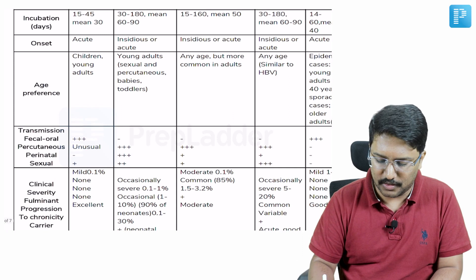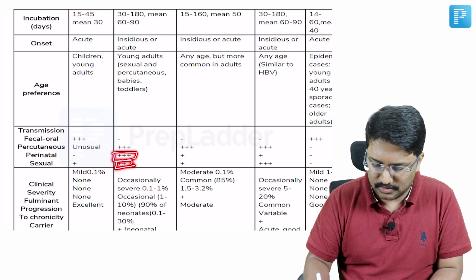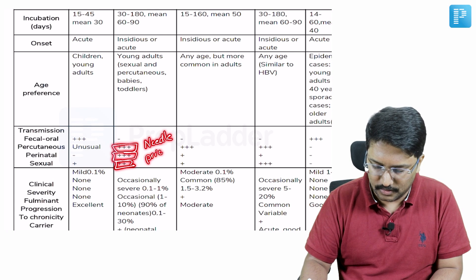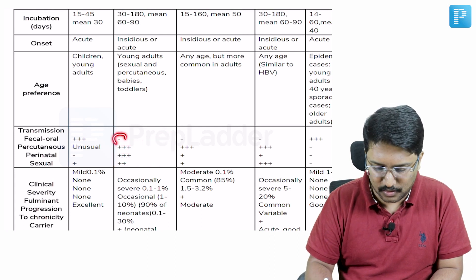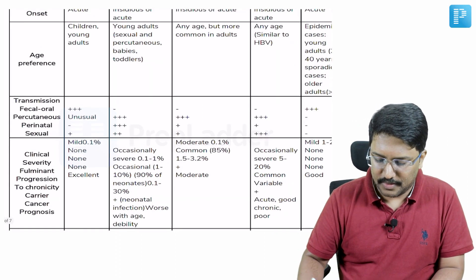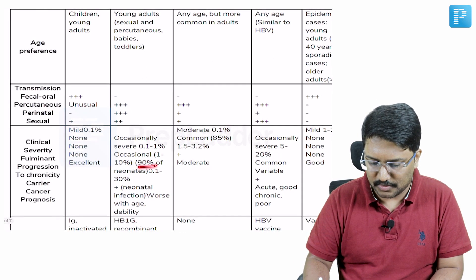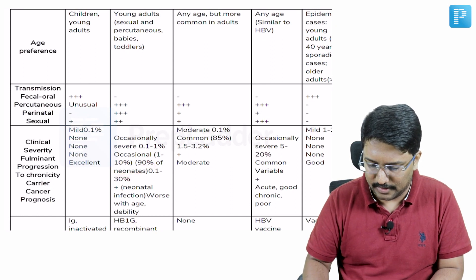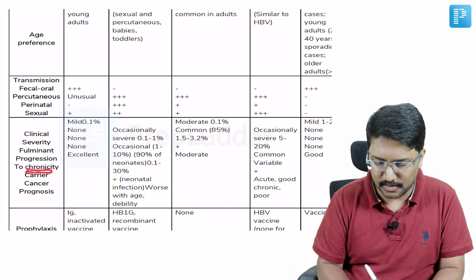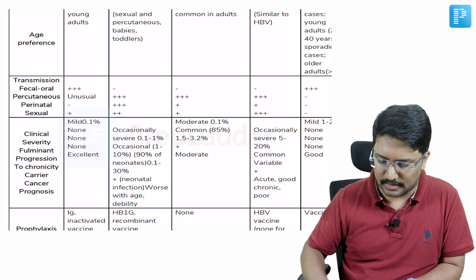In terms of HBV transmission, there is perinatal risk, sexual route risk, percutaneous risk, and needle-stick risk. Feco-oral transmission is not well documented — it is essentially a parenteral route of transmission. In terms of clinical severity, it can occasionally cause very severe disease. Chronicity is not usual in adults but is the rule in neonates if the infection is acquired at that age.